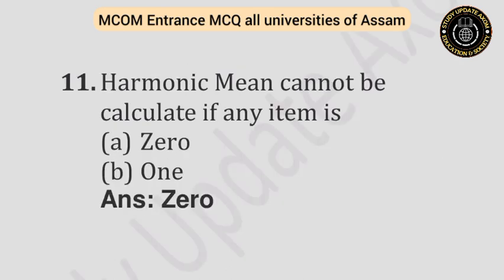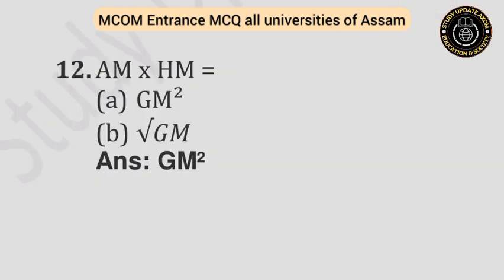Question number eleven: Harmonic mean cannot be calculated if any of the items is — Option A: Zero. Option B: One. Answer is zero. Question number twelve: AM × HM equals — Option A: GM². Option B: Square root of GM. Answer is GM².